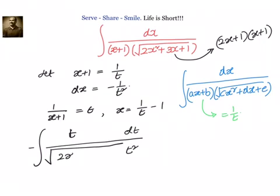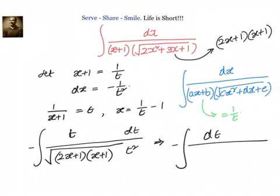So we can write it as (2x plus 1) into (x plus 1). In the next step we will convert them into t's. We write down minus dt. One t we can cancel, and we have t here.